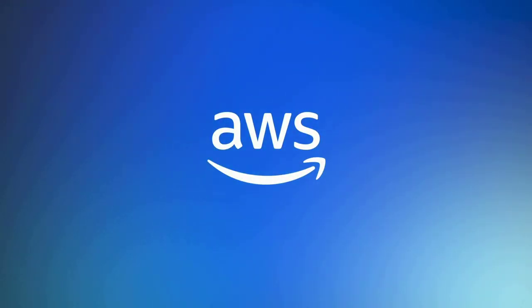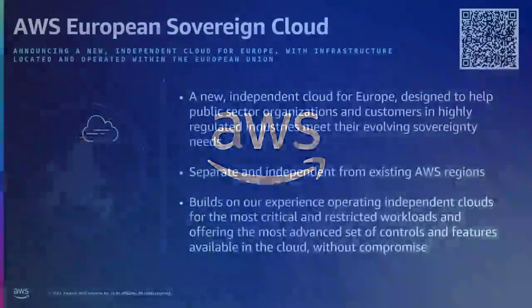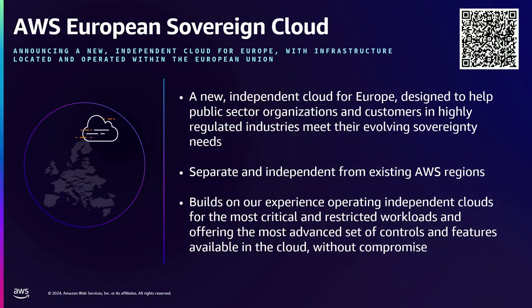Now I'm going to dive deep into some aspects of the European Sovereign Cloud — why we're building it and what it is. AWS European Sovereign Cloud is a net new independent infrastructure offering, which is different from our existing eight commercial regions in Europe. We've primarily built it for the public sector and regulated industries who want to run highly regulated workloads on AWS. Two common themes emerged as we worked backwards with customers on how to solve for this.